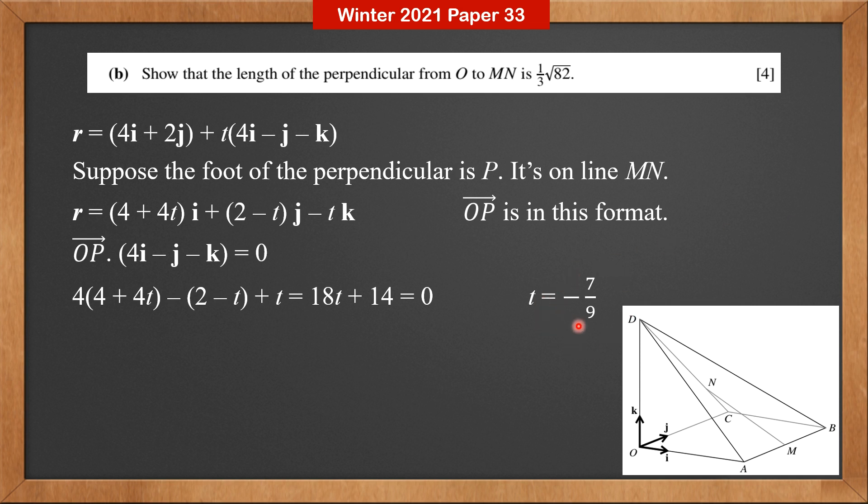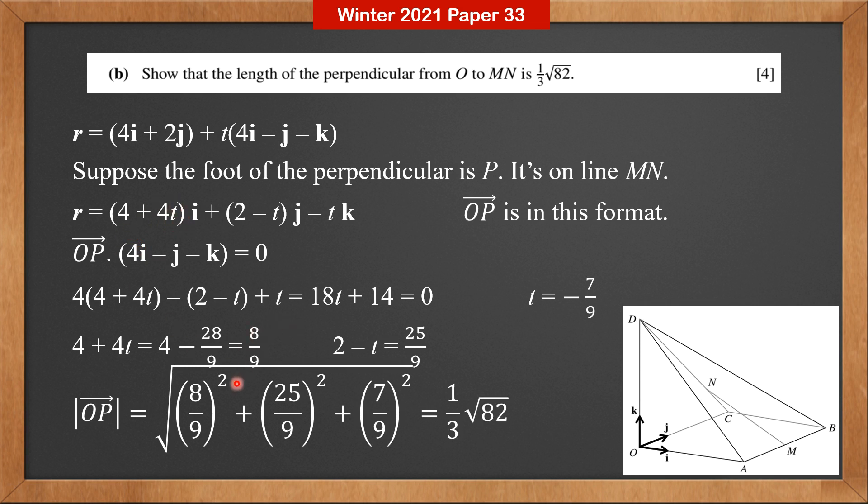Put this T back into the combined line equation. We get 4 plus 4T is 8 over 9, and 2 minus T is 25 over 9. The length of the perpendicular should be the modulus or magnitude of OP. OP is in this format, so it should be 8 over 9 squared plus 25 over 9 squared plus 7 over 9 squared. The magnitude of OP is the length of the perpendicular. Use your calculator, you can find that it's 1 third times root 82.